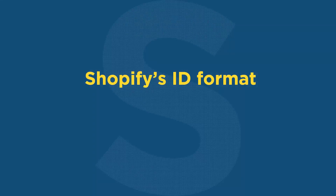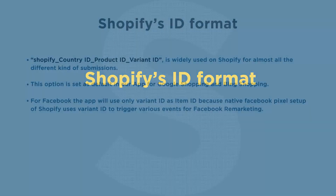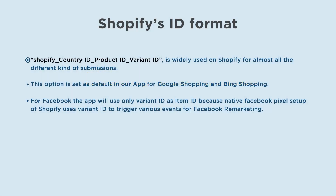Shopify's ID format follows the structure: Shopify underscore CountryCode underscore Product ID underscore Variant ID. This is widely used on Shopify for almost all different kinds of submissions. This option is set as default in our app for Google Shopping and Bing Shopping.